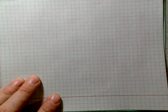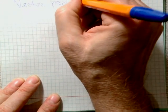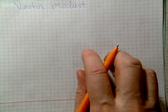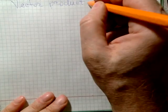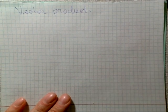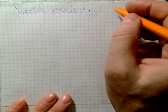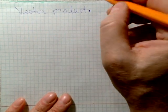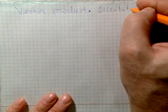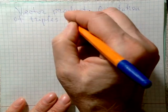Next item will be the vector product of vectors. In order to define this vector product, we need some auxiliary constructions and we need the concept of orientation of a triple of vectors. So before learning the vector product, we introduce some auxiliary concept: orientation of triples of vectors.